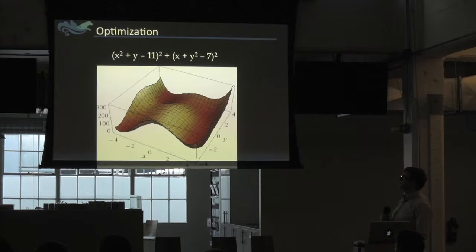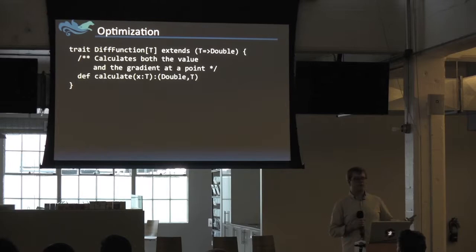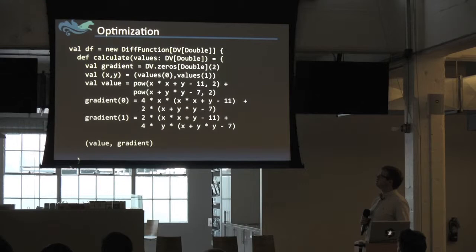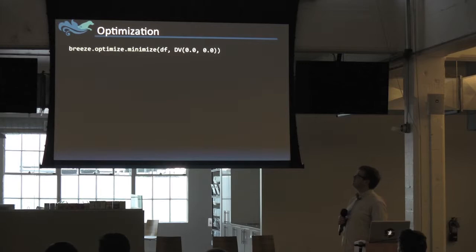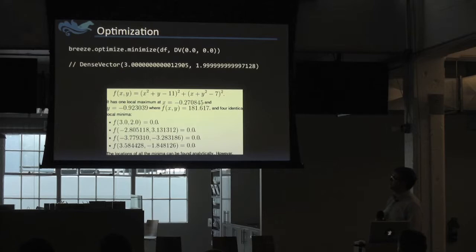Sometimes in machine learning we want to optimize a non-linear function. In Breeze we have a thing called a DiffFunction — a differentiable function with a method called calculate that returns the value of the function as well as its derivative. It's generic in type T so you can use dense vectors, sparse vectors, or GPU vectors from Gust. We can call the minimize function on Breeze, which will automatically use a state-of-the-art optimization algorithm to find a local minimum. We asked Wikipedia if we got the right answer, and sure enough, to eight or nine decimal places, we did.